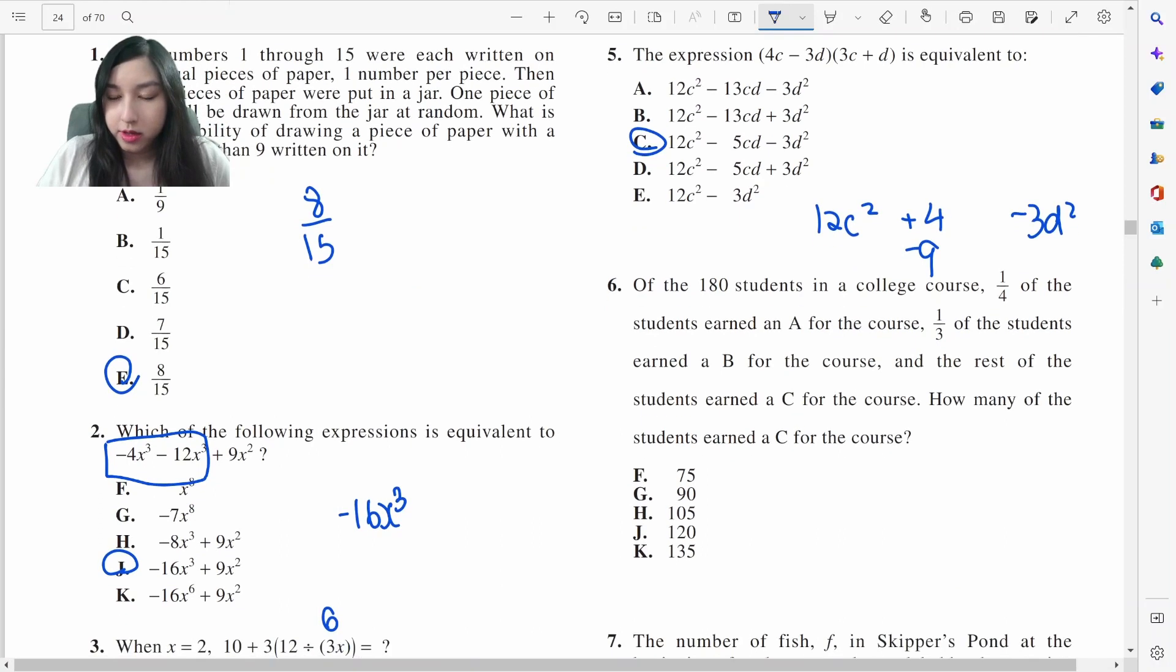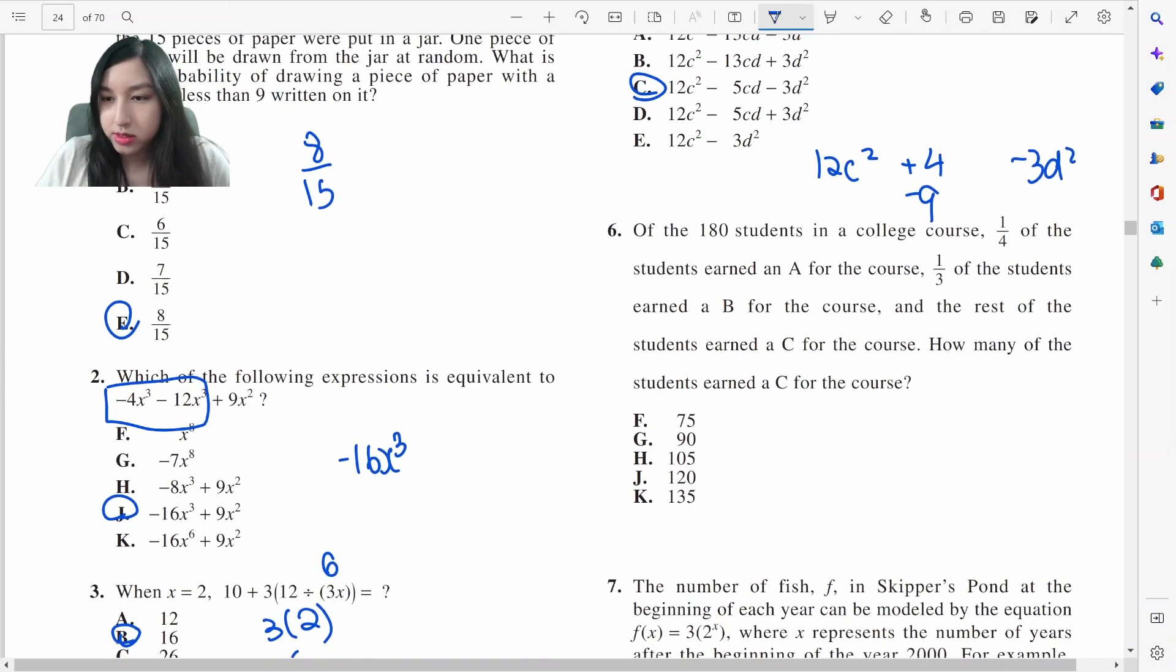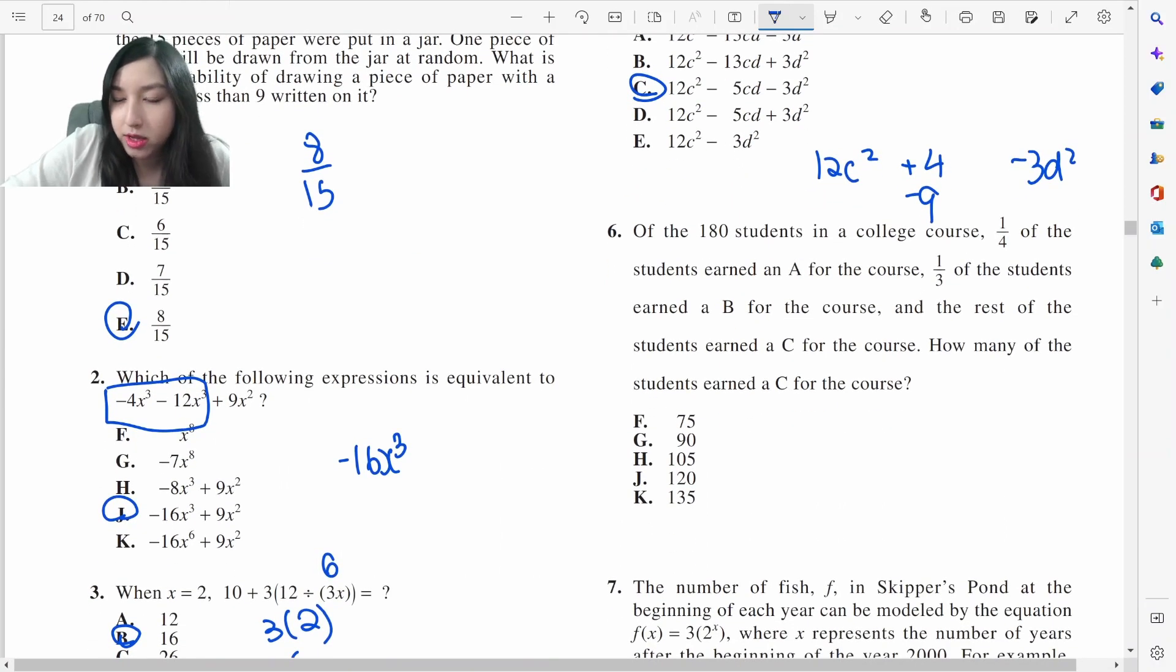180 students, one-fourth of them got an A, one-third got B. So A is one-fourth which is 180 divided by 4, that would be 45. B is one-third, that's 60. And in total this is 105. And we subtract. That leaves us with 75 students for C.